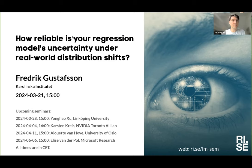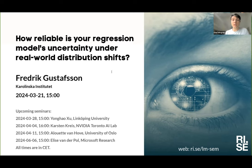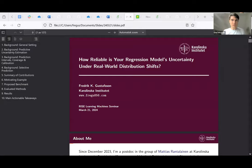Today I am very happy to introduce Fredrik Gustafsson, who is a postdoctoral researcher at Karolinska Institute. Fredrik received his PhD in machine learning last year from Uppsala University with a thesis towards accurate and reliable deep regression models, supervised by Thomas Schön. He is currently working in the group of Matthias Rantalainen at Karolinska Institute on machine learning and computer vision for computational pathology. The topic today will be how reliable your regression model's uncertainty is under real-world distributional shifts.